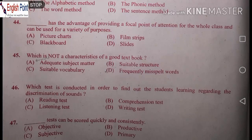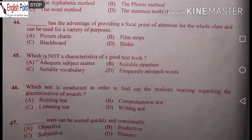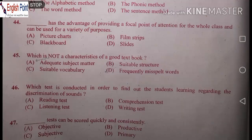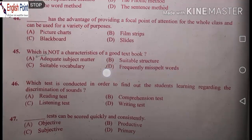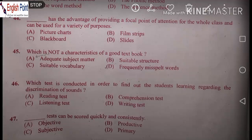Which is NOT a characteristic of a good text? Options: A) adequate subject matter, B) suitable structure, C) suitable vocabulary, D) frequently misspelled word. D is the right answer — frequently misspelled word is not a characteristic of good text.